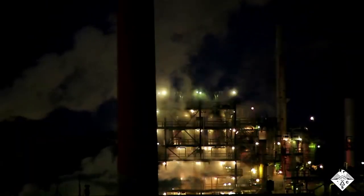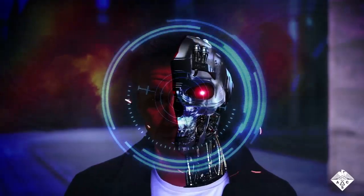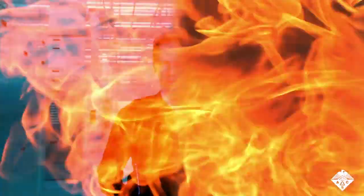In the blockbuster Terminator movie franchise, an evil robot can morph into different human forms and objects or ooze through narrow openings thanks to its liquid metal composition.